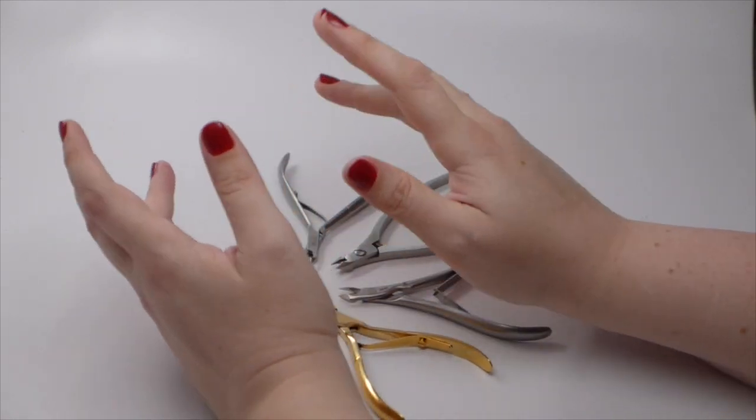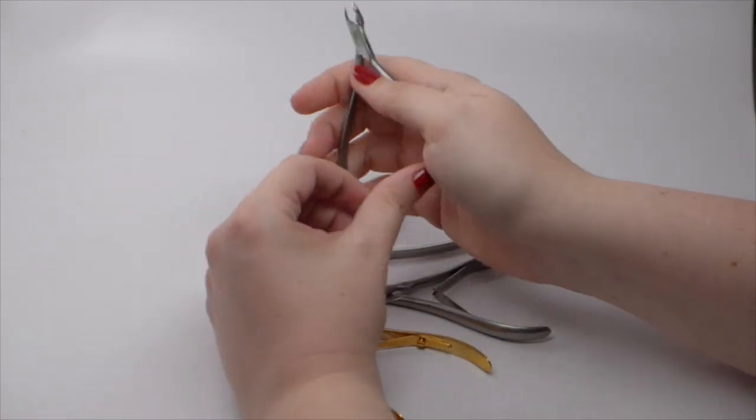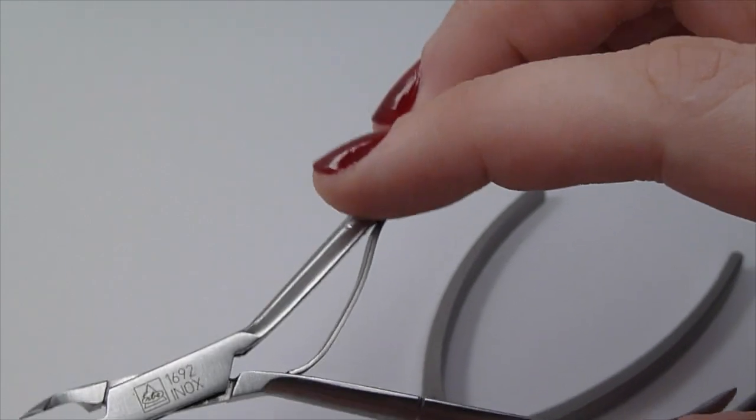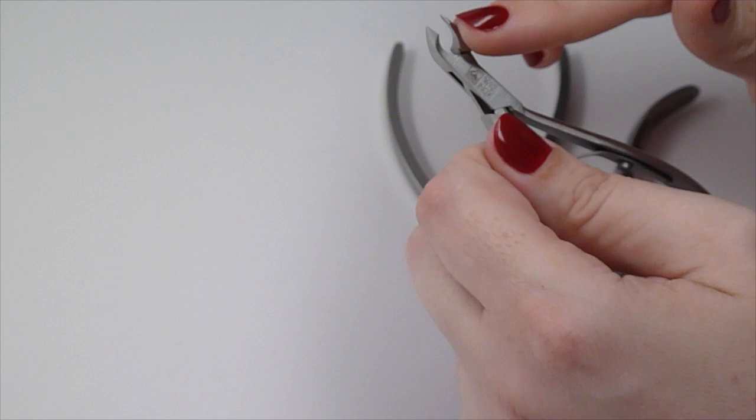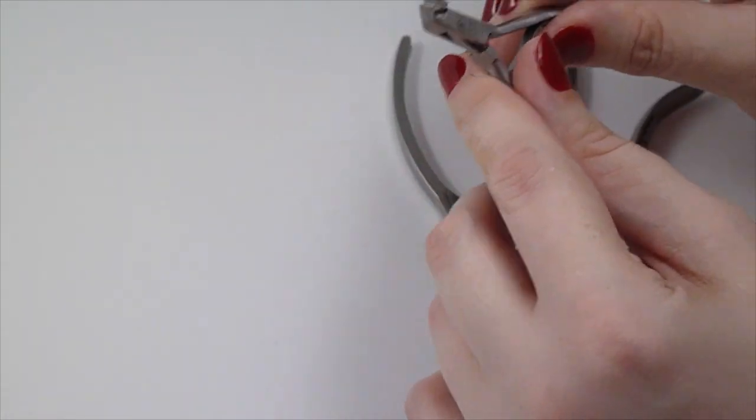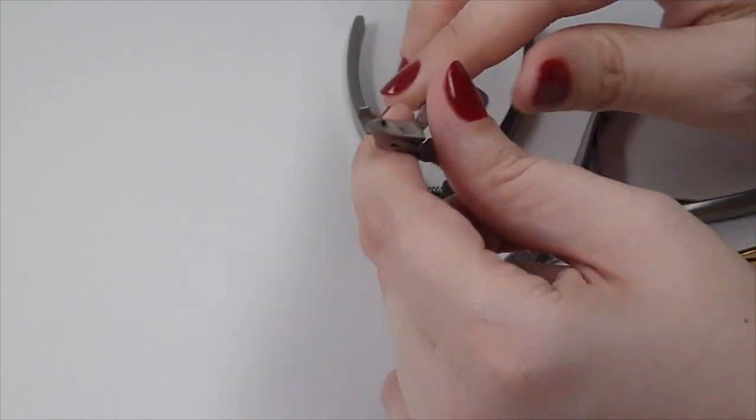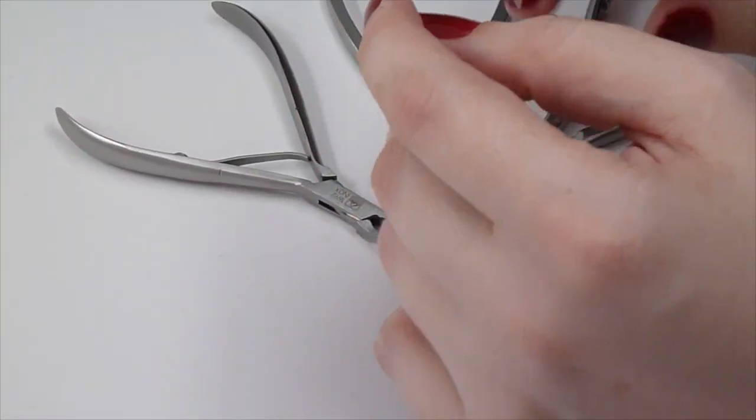Because those sharpened edges just crush against each other and dull themselves over time. Now, if you consider that a tiny bit of steel is removed every time you sharpen a nipper, it's really easy to see that repeated sharpening is actually going to shorten its lifespan. So harder steel means a longer life.